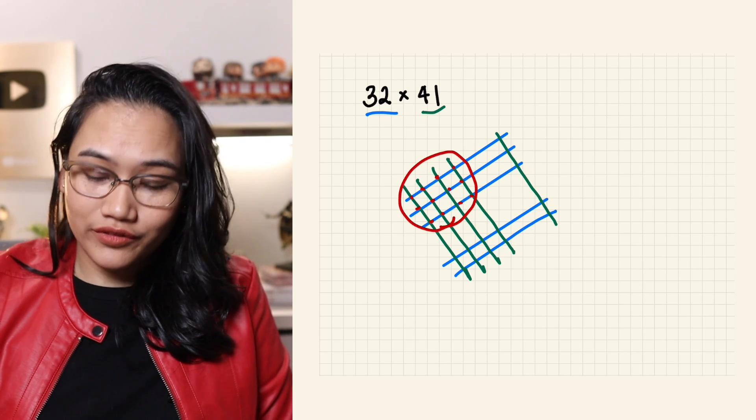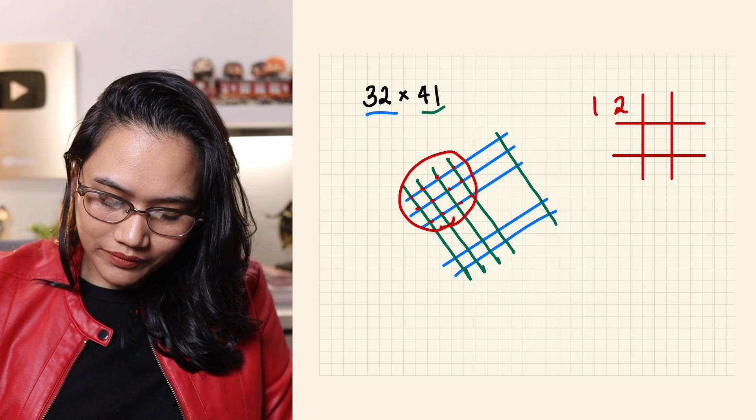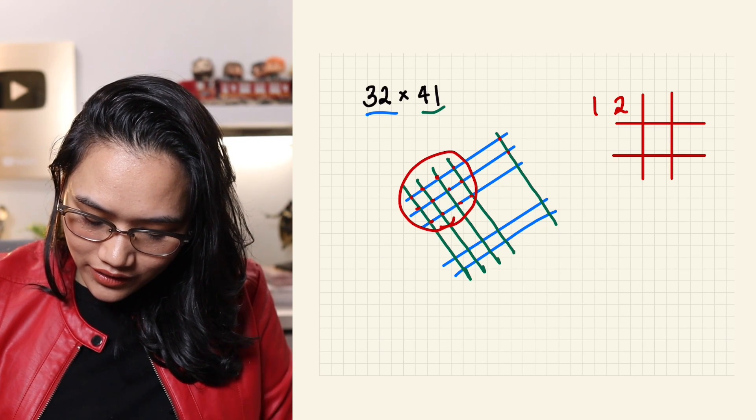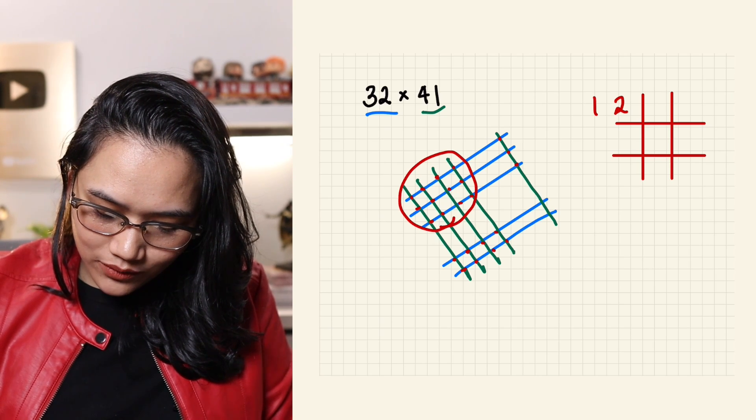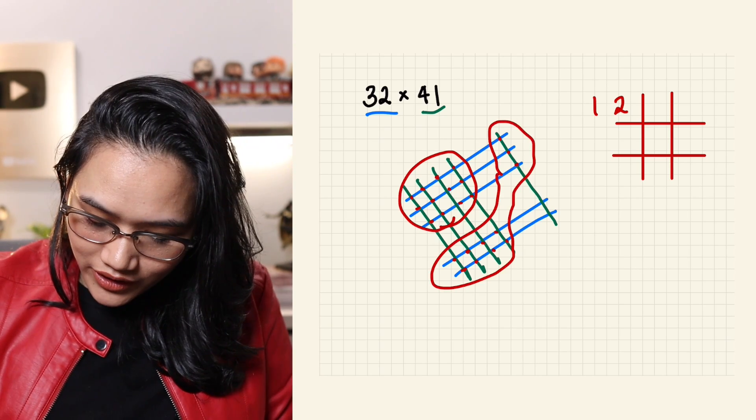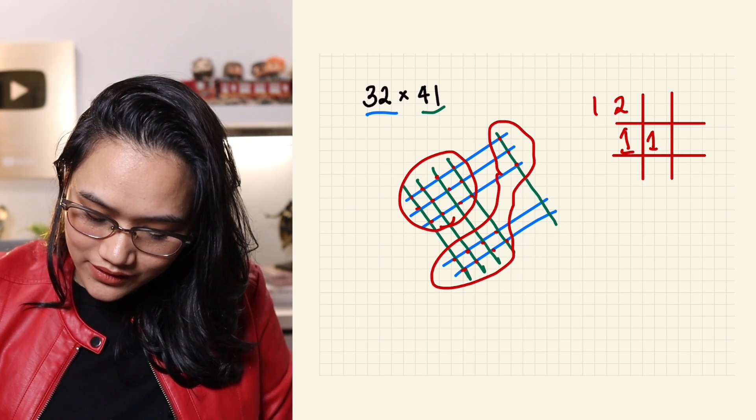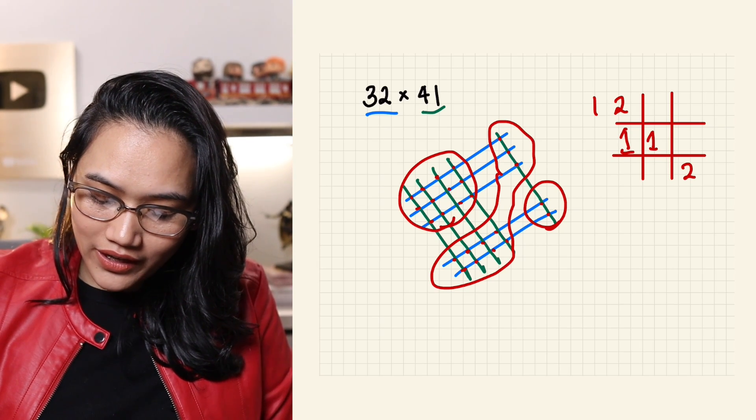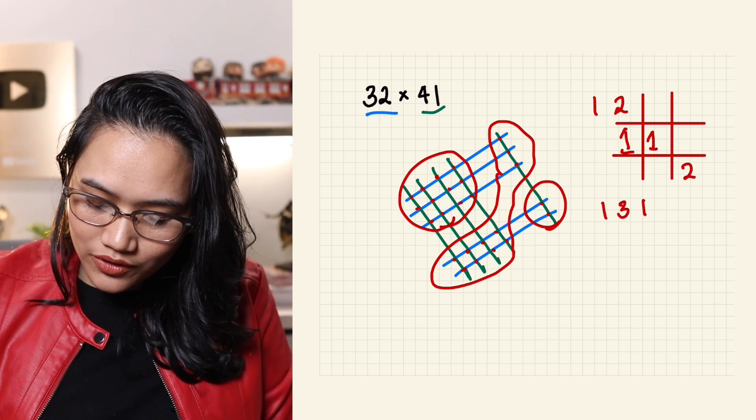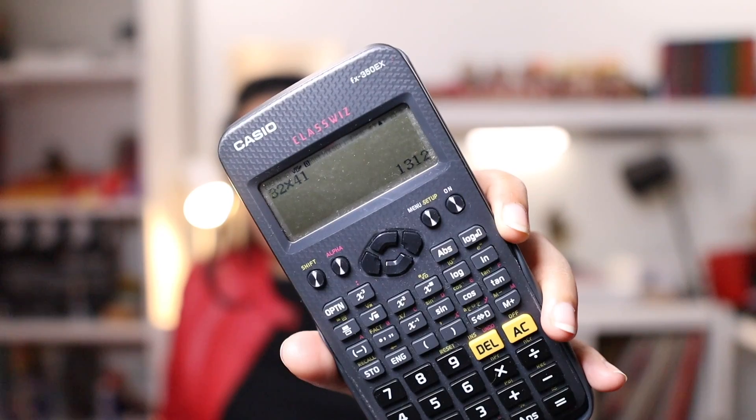We have 12. So, same as earlier. If we have a grid, we write 12 here. In the middle, 1, 2, 3. And then, here we have 8. So, that would be 8 plus 3 or 11. 1 here and 1 here. That's 11. Next, at the end: 2. Put it right here. The answer is 1, 3, 1, 2. That's 1,312. To check, we have 32 times 41, 1,312.